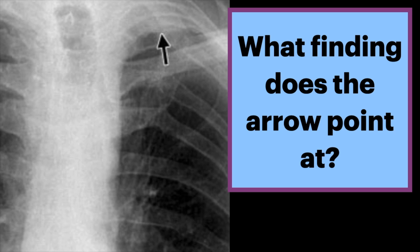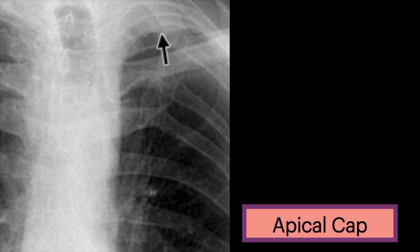What finding does the arrow point at? We see a crescentic opacity with an irregular border projecting over the left lung apex on this frontal chest radiograph. The answer is an apical cap.